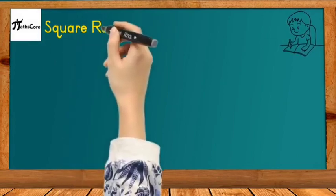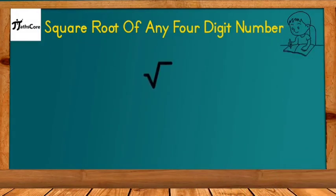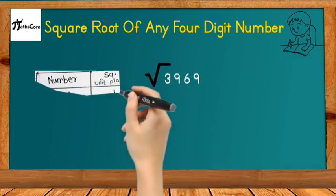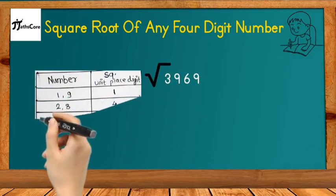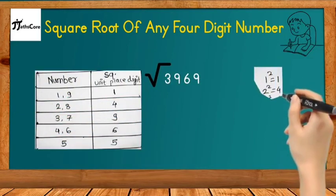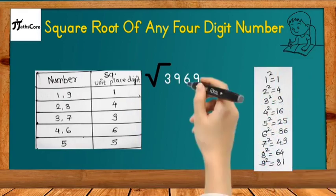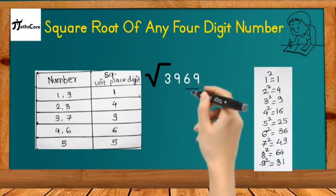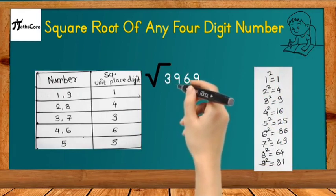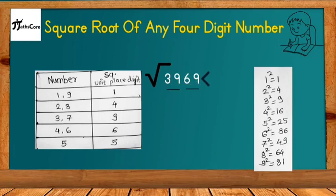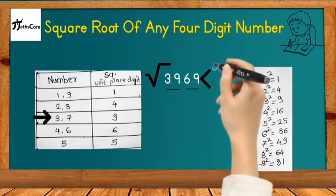Let's take an example: find the square root of 3969. We use the same technique as before. First, write down the table and squares of 1 to 9. Then, make pairs of digits: the first pair is 69 and the second is 39. Now focus on the unit place digit 9 — after squaring, both 3 and 7 give unit digit 9, so there are two possibilities: 3 or 7. We will decide later.